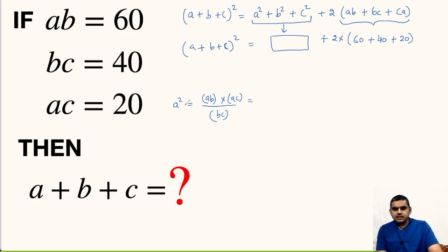We can express A square in this manner. Let us substitute the values. AB is 60, AC is 20 and BC is 40. So 20 times 2 is 40, this is 30. So A squared is 30.